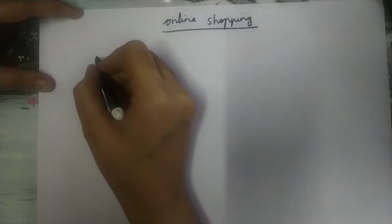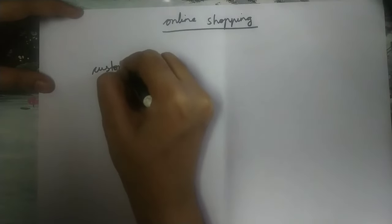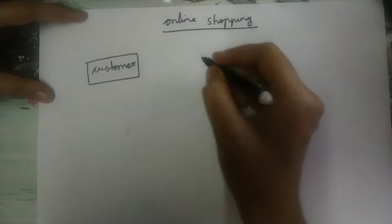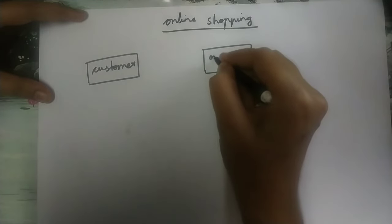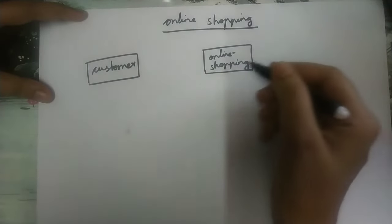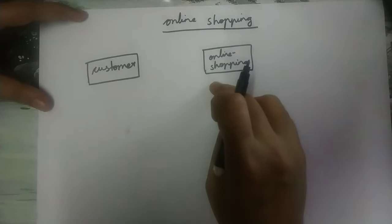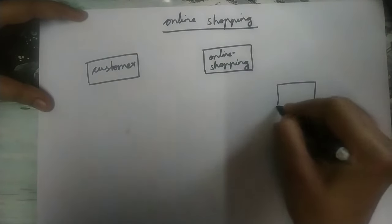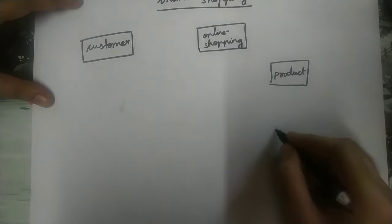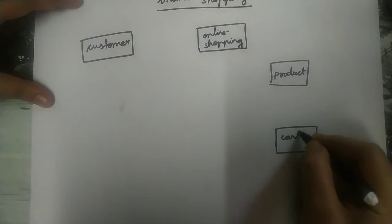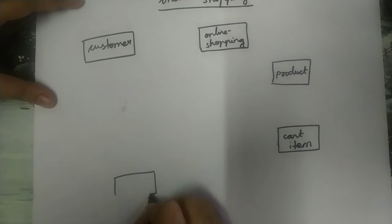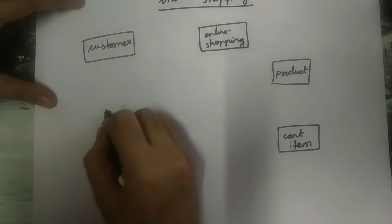Now let us draw those entities. Customer is the first entity and must be written inside a rectangular box. Next, online shopping — it is conceptually existing and is also an object, so therefore it is an entity and must be written inside a rectangular box. Next is product, then cart item — the item that the customer has selected — then cart, and then payment.